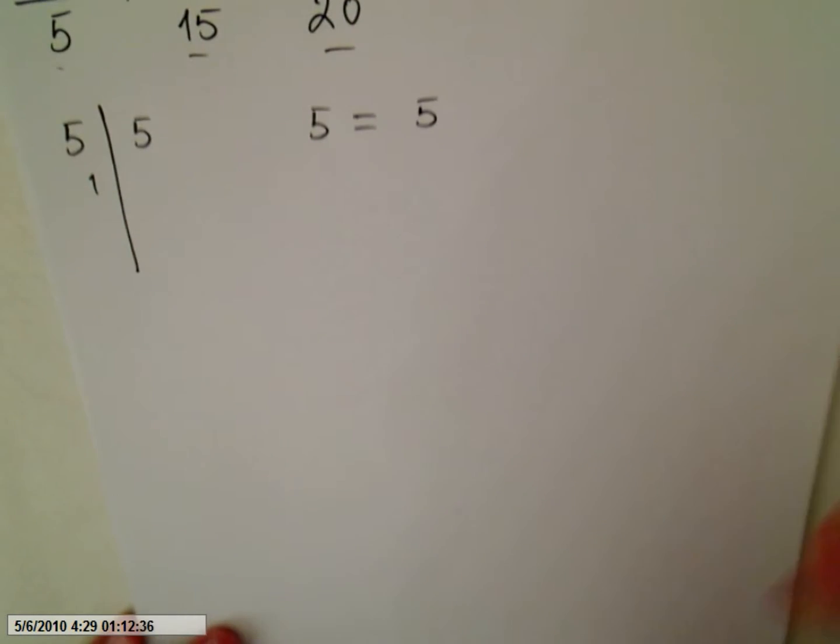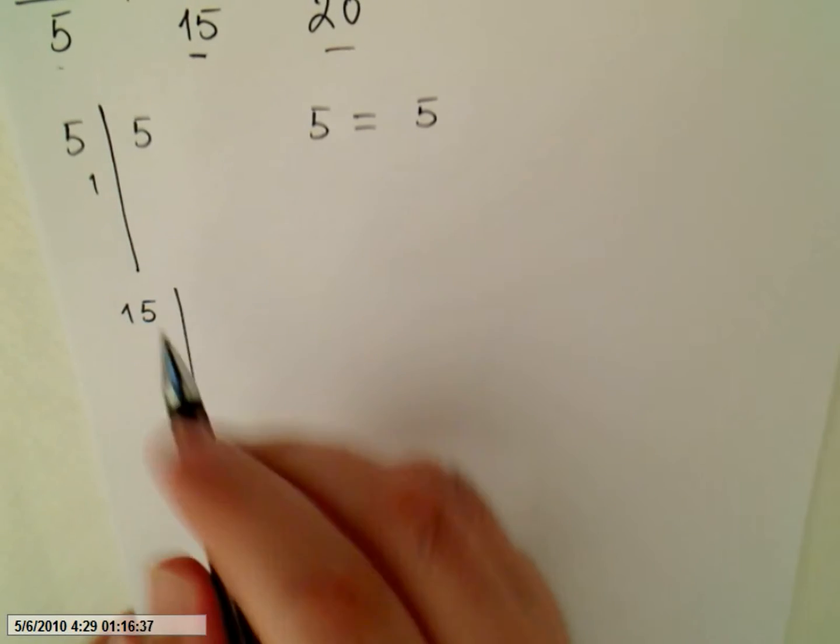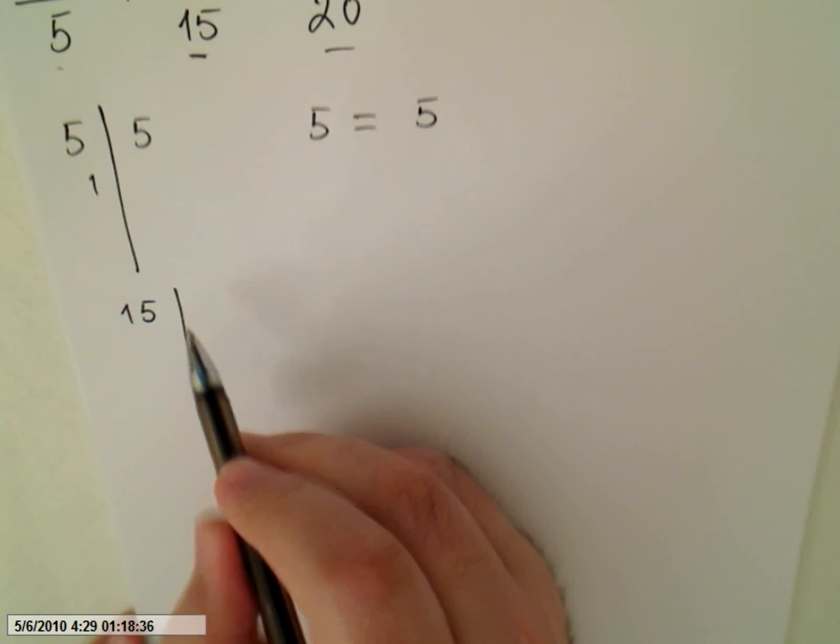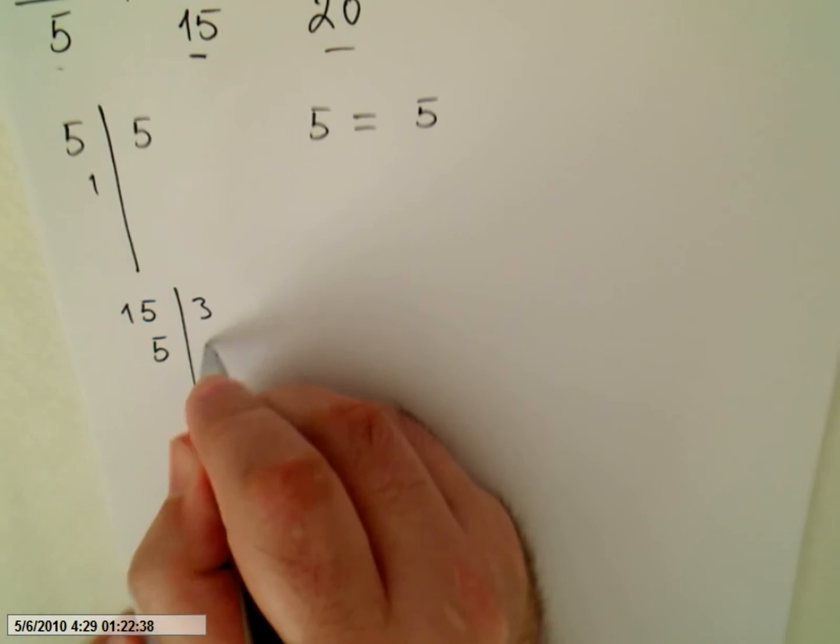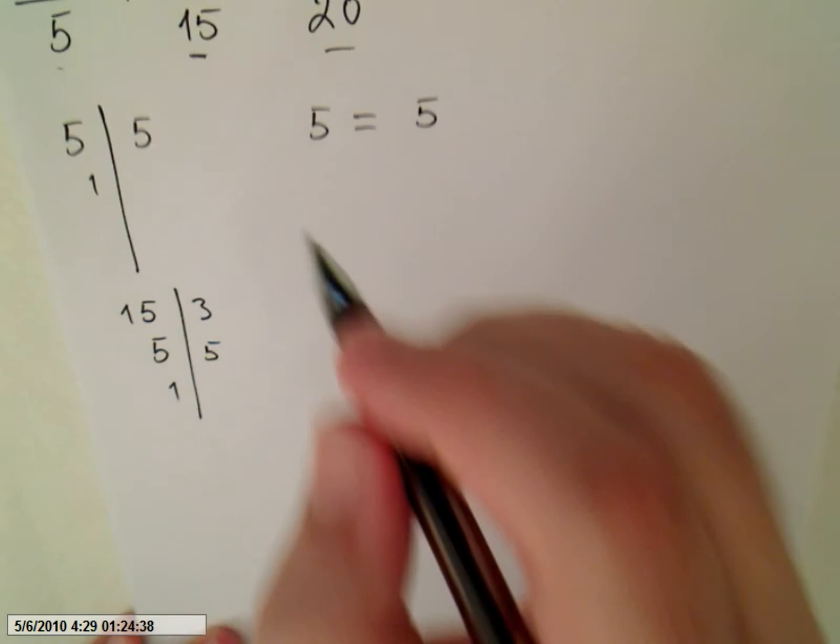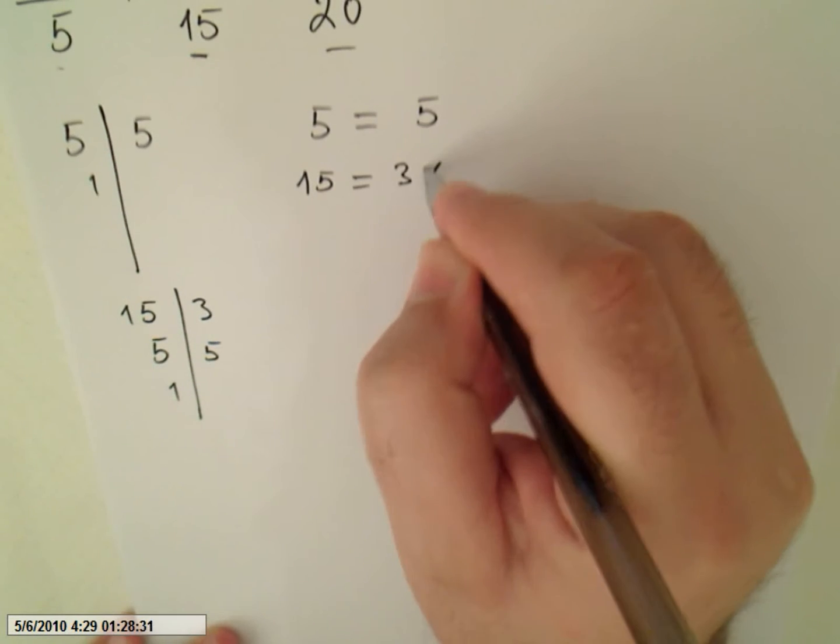Now let's factorize 15. 15 does not divide 2 but it divides 3, we get 5. We divide 5, we get 1. So 15 equals 3 times 5.